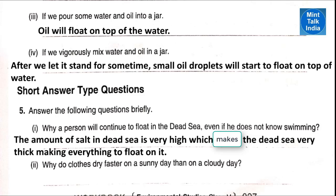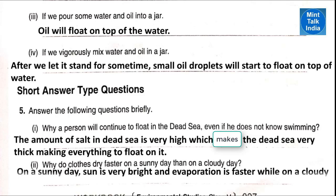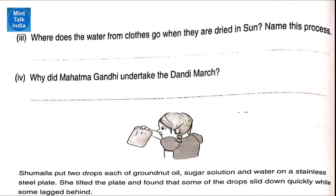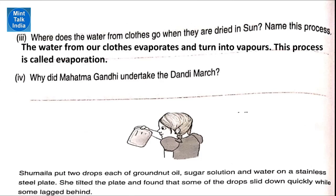Why do clothes dry faster on a sunny day than on a cloudy day? On a sunny day the sun is very bright and evaporation is faster, while on a cloudy day the rate of evaporation is slow. Where does the water from clothes go when they are dried in the sun? Name this process. The water from our clothes evaporates and turns into vapours. This process is called evaporation.